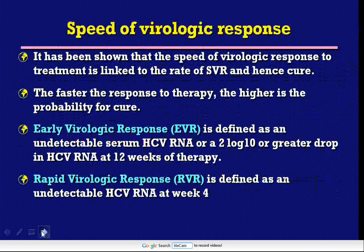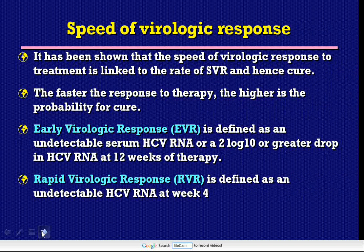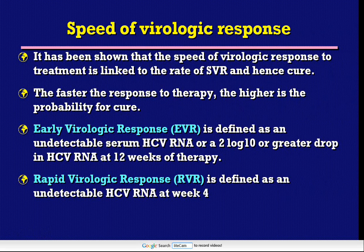Regarding the speed of virologic response: it has been shown that the speed of virologic response to treatment is linked to the rate of sustained virologic response and hence the rate of cure. The faster the response to therapy, the higher the probability of cure. The early virologic response was defined as undetectable serum HCV RNA or a 2-log or greater drop in HCV RNA at 12 weeks of therapy, while the rapid virologic response is defined as undetectable HCV RNA at week 4.